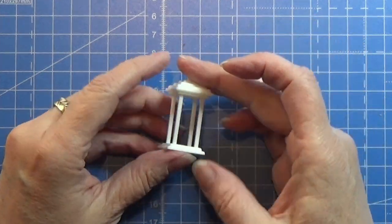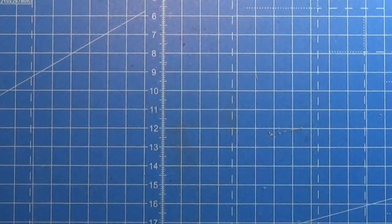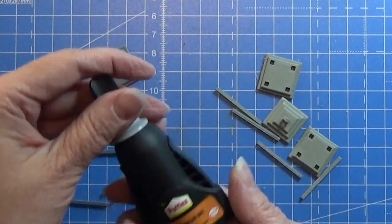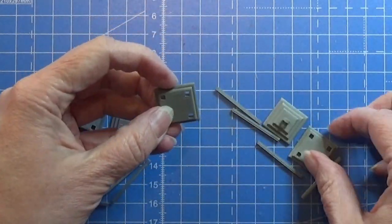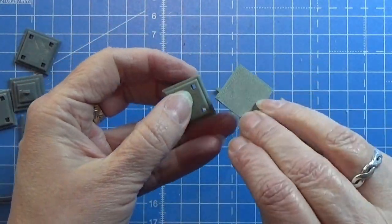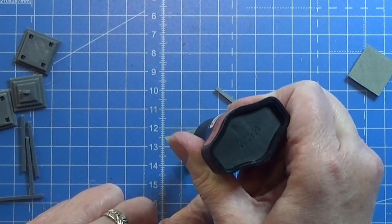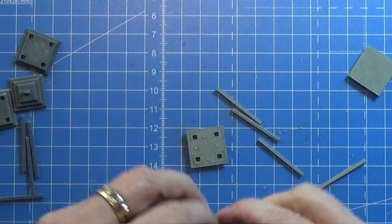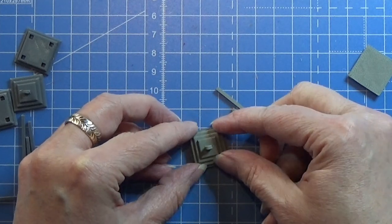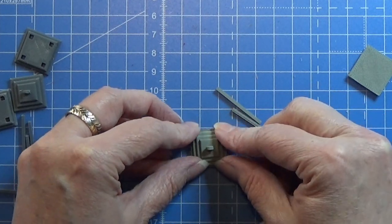I designed this lantern in Fusion 360 and 3D printed it on my new FDM printer, and it turned out really cool. Here I'm showing you how to put this piece together into this little cute lantern for the dollhouse.